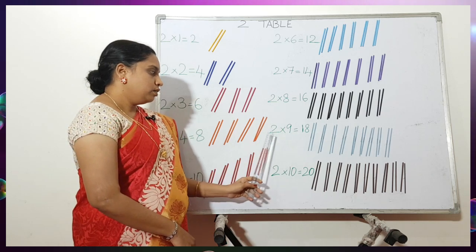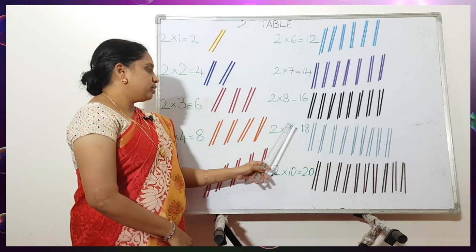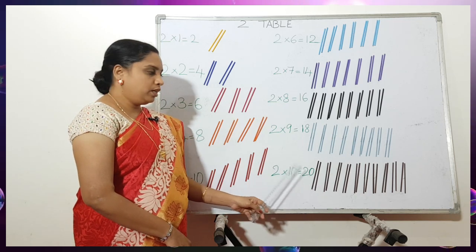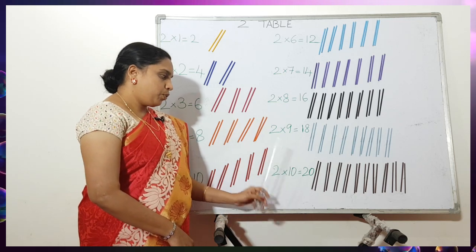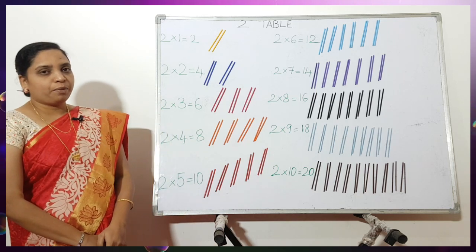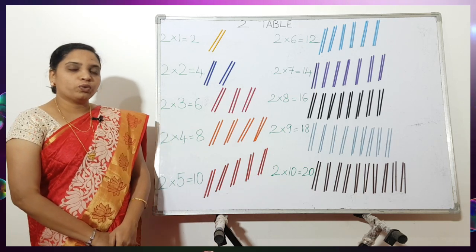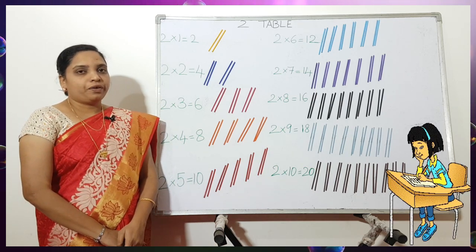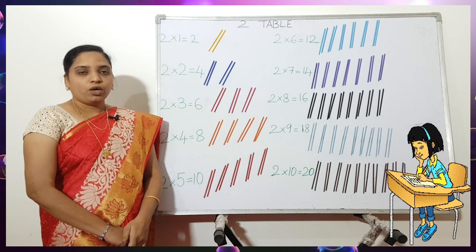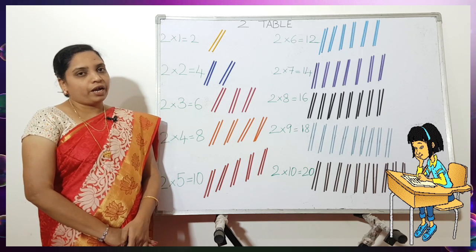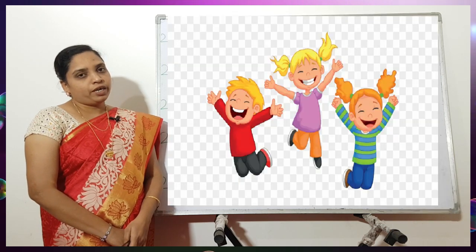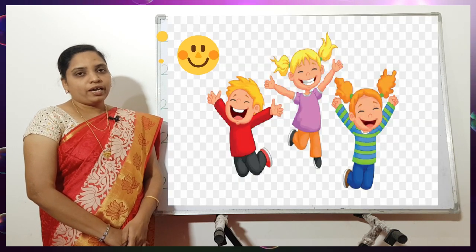2 eights are 16, 2 nines are 18, 2 tens are 20. So children, for today's assignment you have to learn the two table and write it two times. Thank you children, have a nice day.